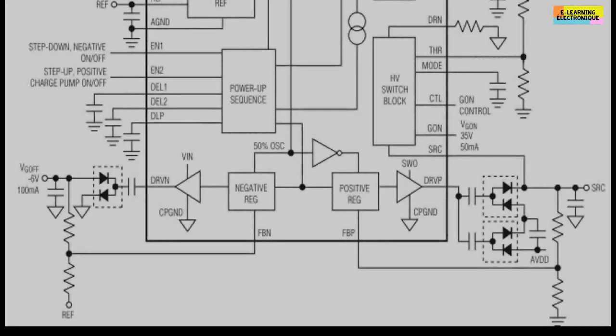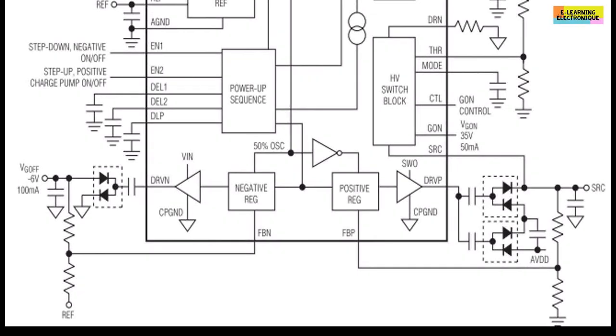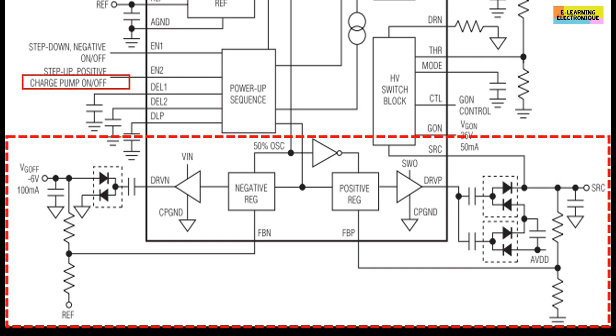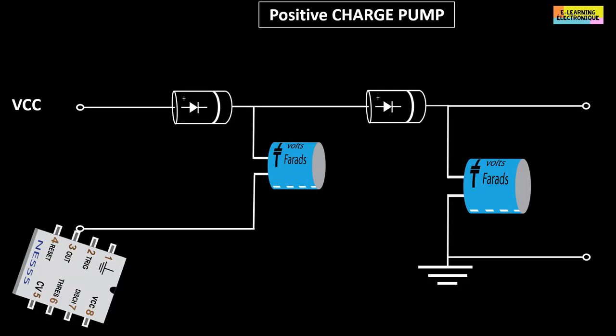In our example, DC-DC MAX17113 converter, the charge pump circuit uses instead of manual switches, electronic switches controlled by an oscillator. The circuit also includes diodes and voltage regulators. The principle of operation of the charge pump in this configuration is as follows.